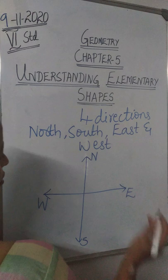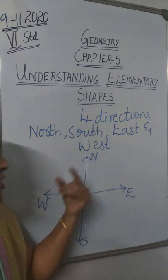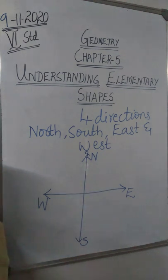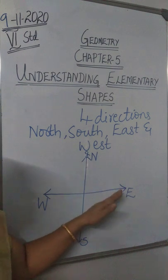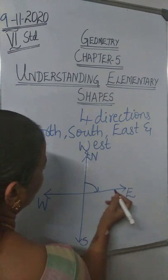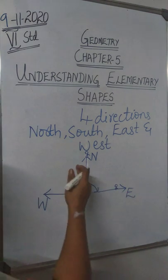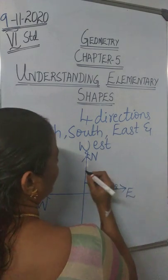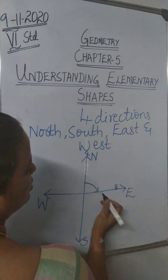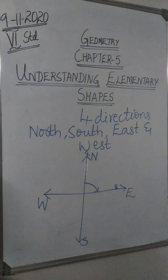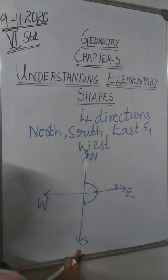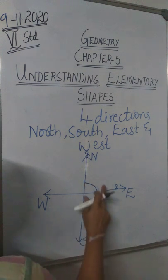Now, if a person is standing in the north direction, which is the opposite direction? It is south. If the person travels from north to east, he has come from north to east. What angle has he travelled? He has travelled a right angle — an angle of 90 degrees. So he has travelled one right angle. Again, if he travels another right angle, he will reach south. So he has moved two right angles.